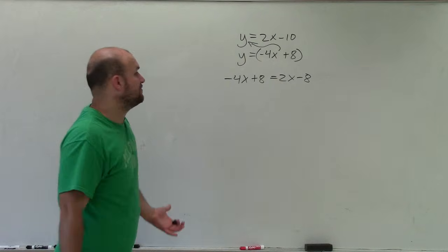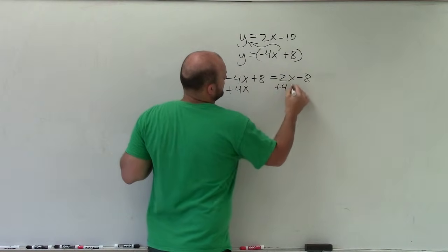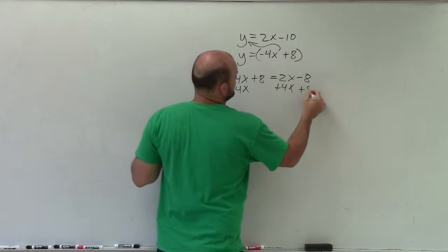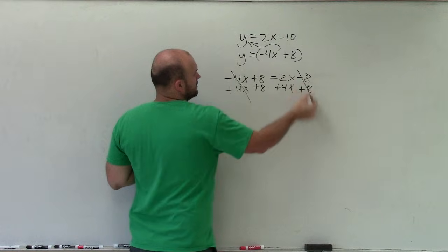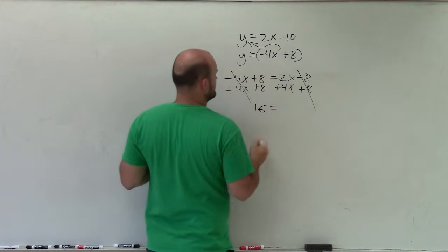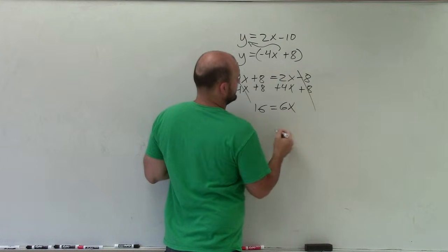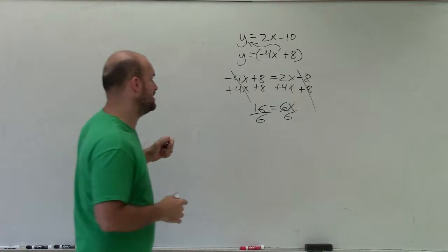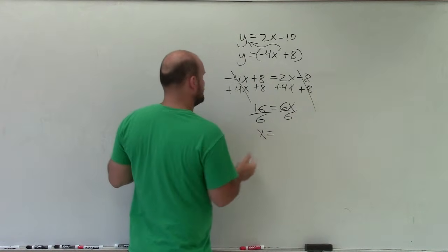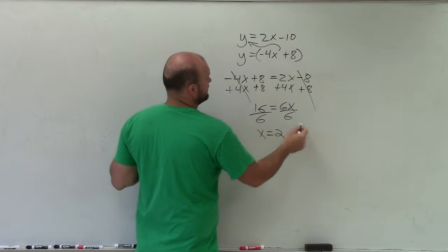Now I have an equation that I can solve for x. So to do that, I'll just add 4x, add 4x. Here I have to add 8, add 8. So therefore I have 16 equals 6x, divide by 6, divide by 6. Now 6 doesn't evenly go into there, but x is equal to, goes in there 2 and a half times, so 2.5.